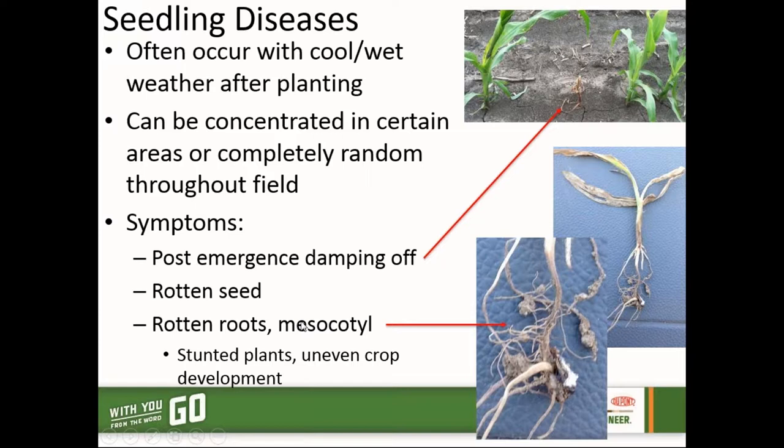Seedling diseases can also attack seeds themselves, causing those seeds to rot. Very commonly, these seedling diseases will also attack our roots and our mesocotyl. In this example, it looks like we had some soil saturation at about this level within the field, and any tissue below that water line looks like it was attacked pretty heavily, potentially by Pythium or other seedling disease species.